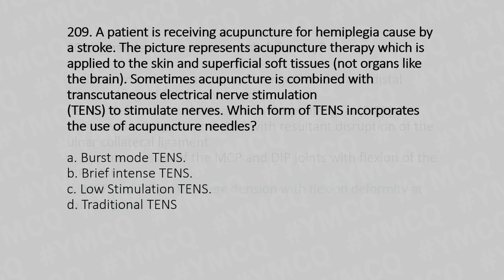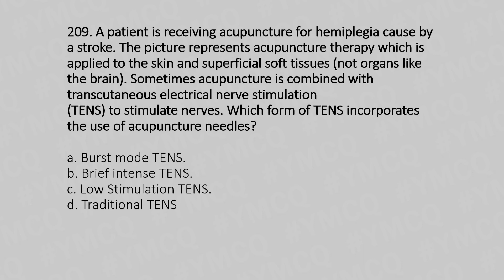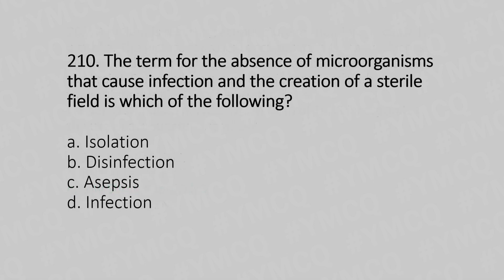Question 209: A patient is receiving acupuncture for hemiplegia caused by a stroke. Acupuncture is applied to the skin and superficial tissue; sometimes it is combined with transcutaneous electrical nerve stimulation to stimulate nerves. Which form of TENS incorporates the use of acupuncture needles? Option A: Burst mode TENS. Option B: Brief intense TENS. Option C: Low stimulation TENS. Option D: Traditional TENS. The answer is Option C: Low stimulation TENS.